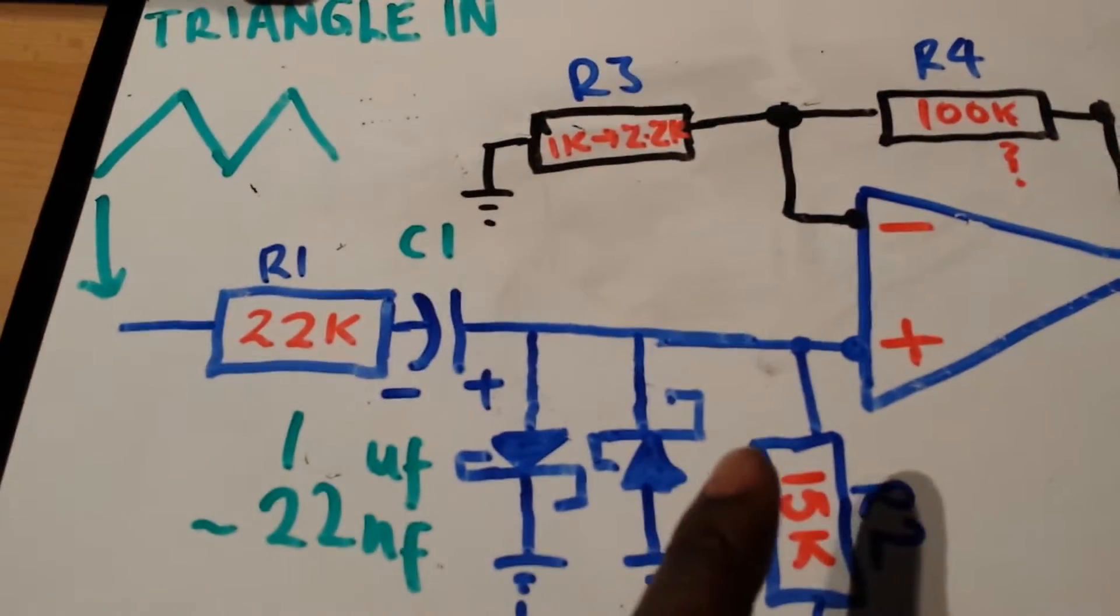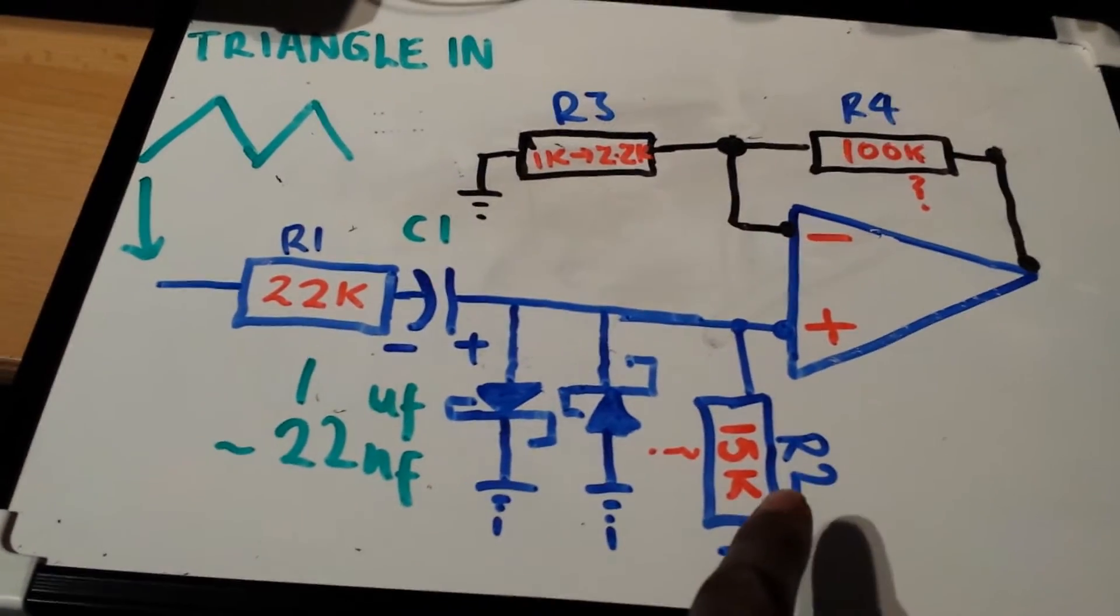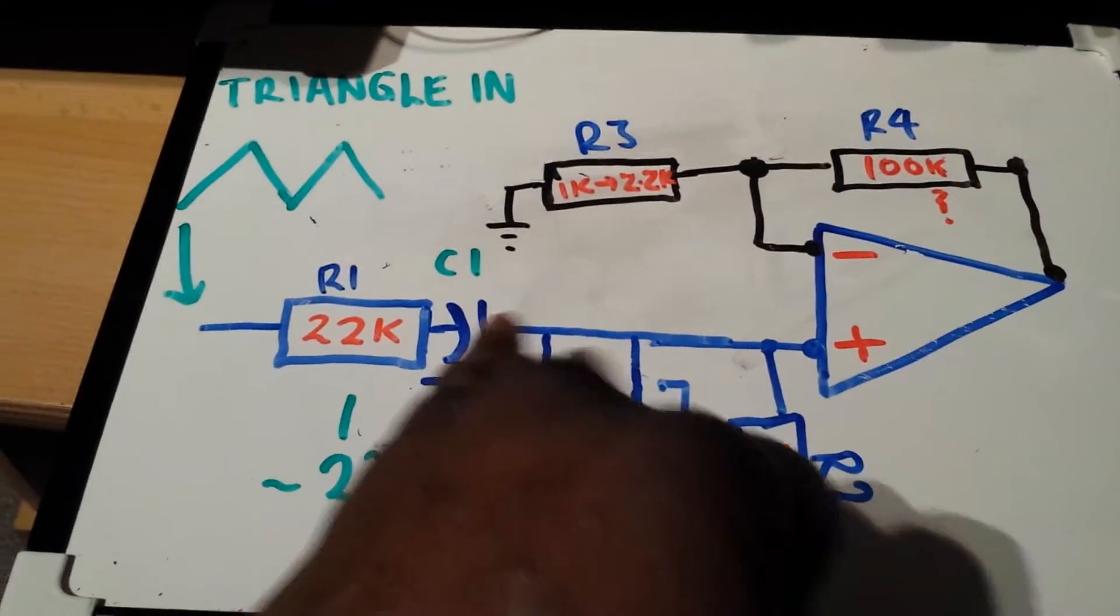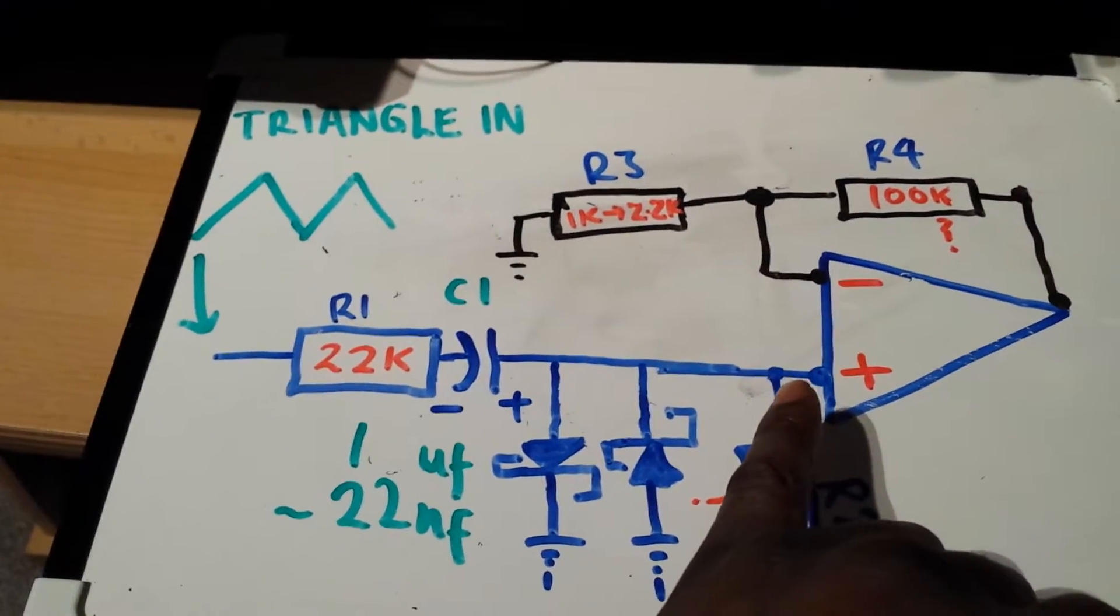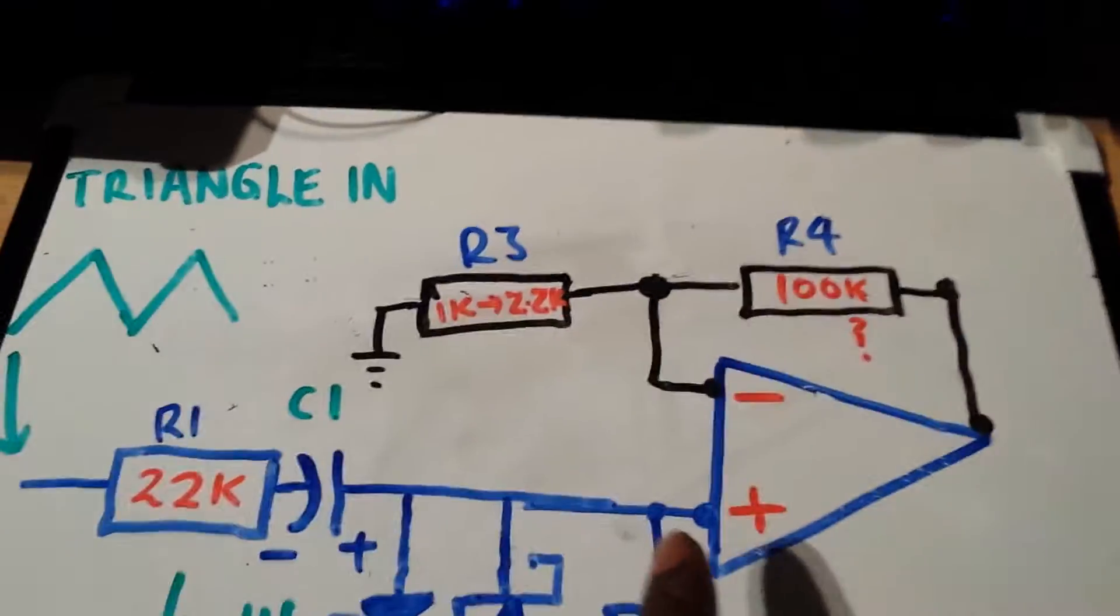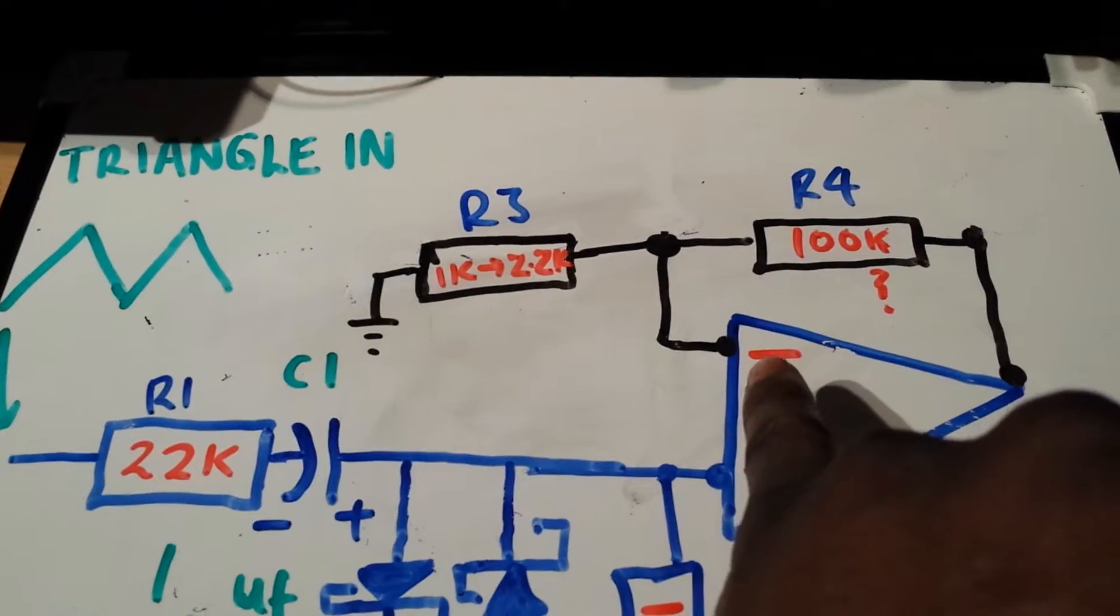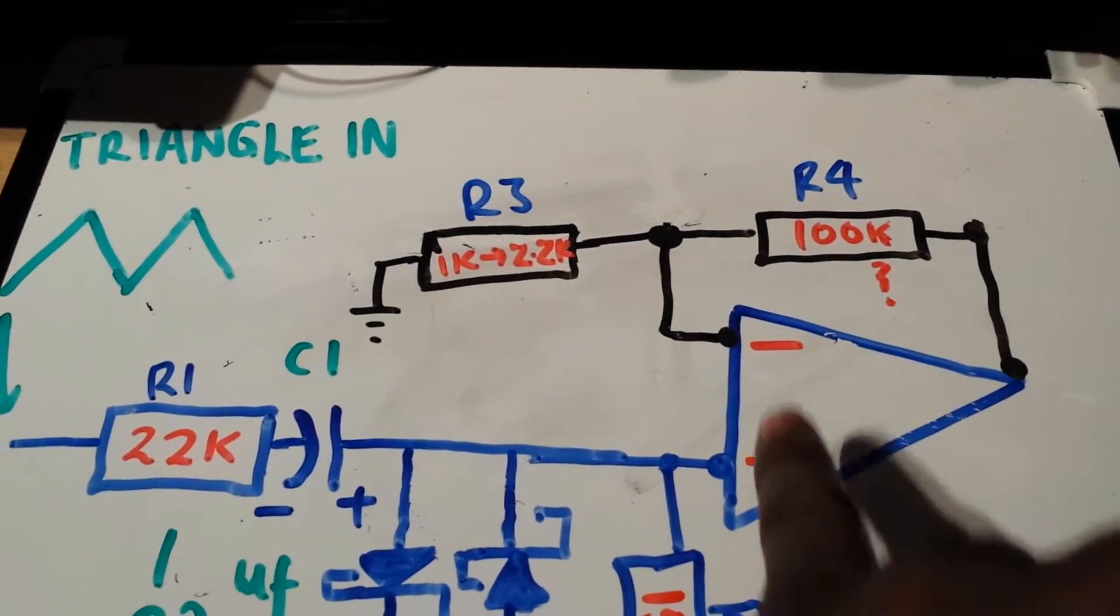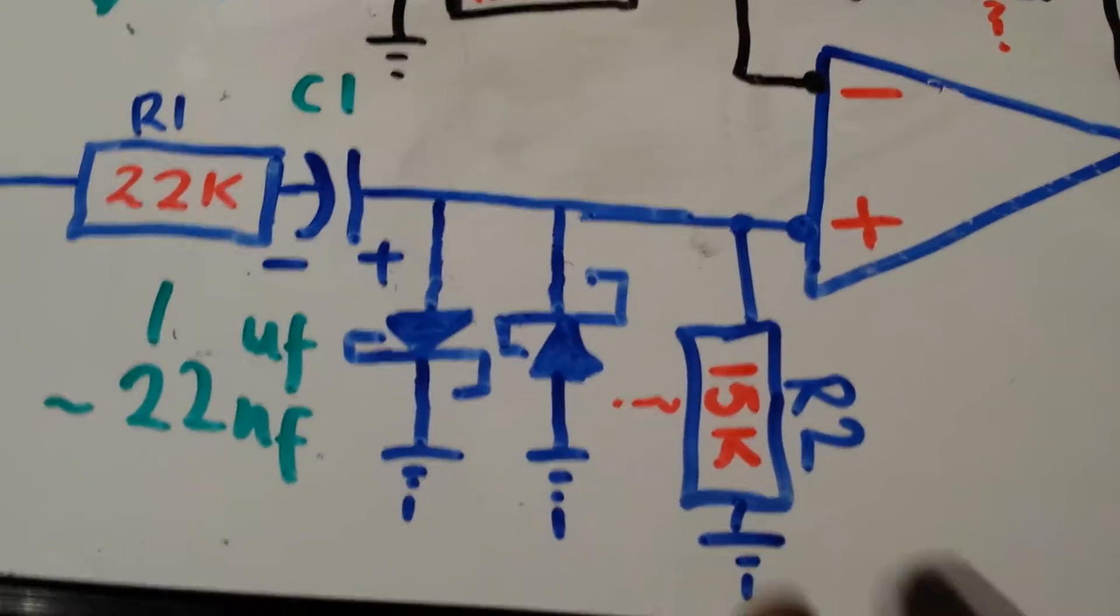To be honest with you, where this R2 resistor is, it doesn't matter which side of these diodes that goes as long as it's linked to the non-inverting node of your operational amplifier. And let's quickly remind ourselves of the operational amplifier: we have non-inverting input and inverting input.